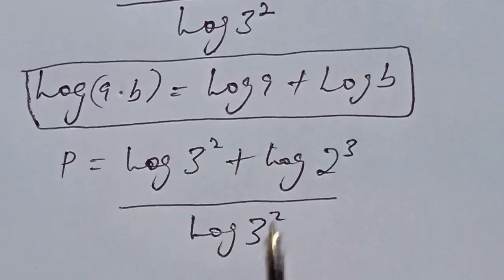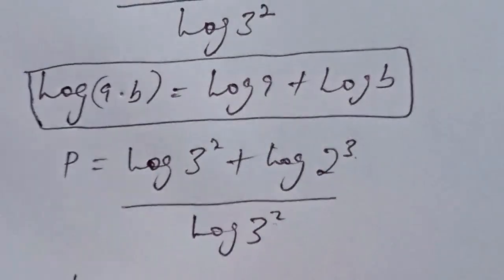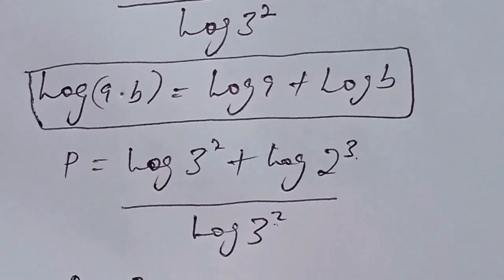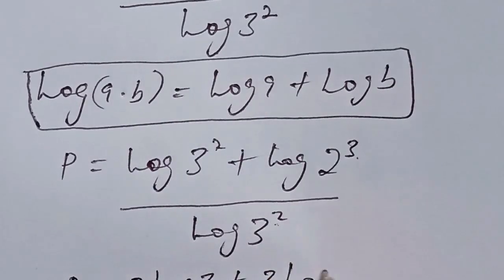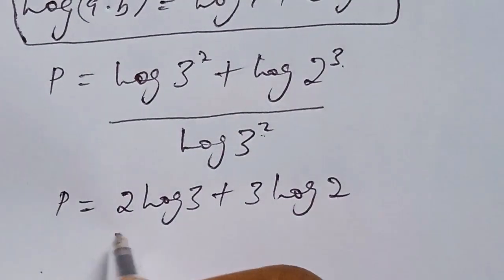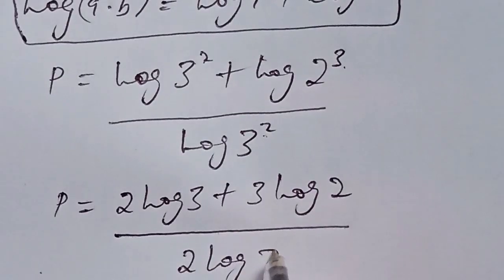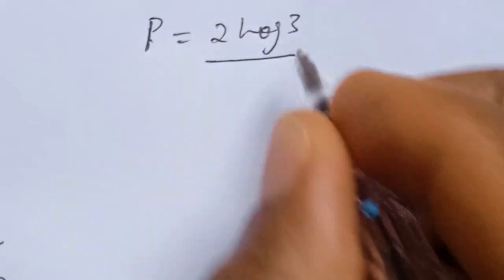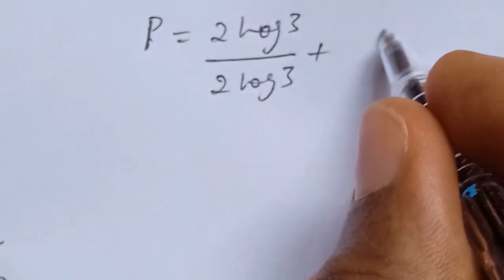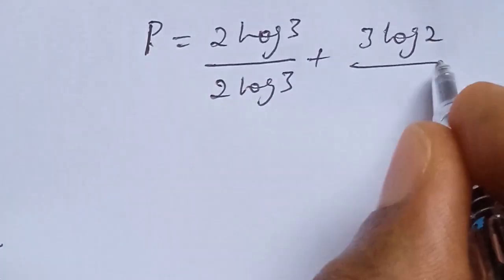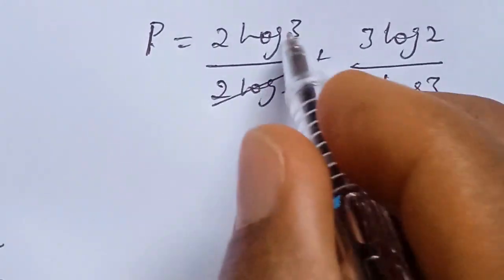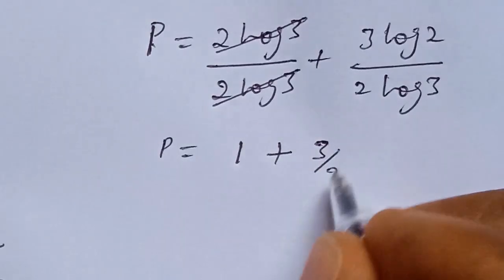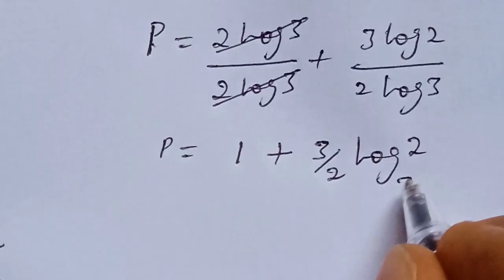Bringing those powers down to the base, the numerator becomes 2 log 3 plus 3 log 2, and the denominator becomes 2 log 3. So p equals (2 log 3 + 3 log 2) over 2 log 3. The 2 log 3 terms cancel, leaving p equals 1 plus (3/2) log 2 base 3.